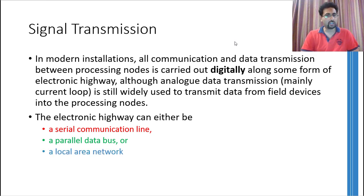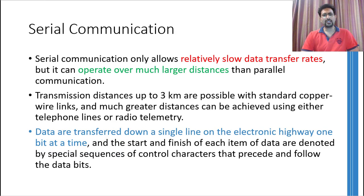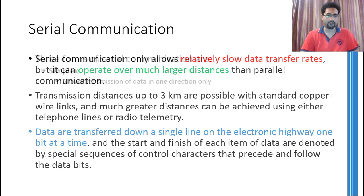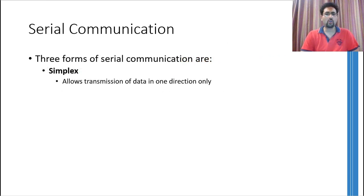A local area network can utilize serial communication or parallel buses. You can think of the local area network as a large network of roads in which some roads are multi-lane, whereas others are single-lane. Serial communication has relatively slow data rates but can operate at much larger distances than parallel buses — you can easily achieve communication distances of up to three kilometers using simple copper wire links. For higher distances, telephone lines, radio telemetry, and sometimes fiber optics are used. In serial communication, only one line is used to transfer data, so in its most basic form only one bit at a time is transferred. Start bits and end bits are used to notify the receiver about the start and end of data.